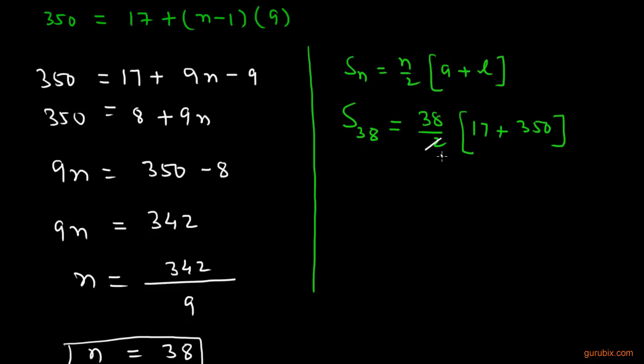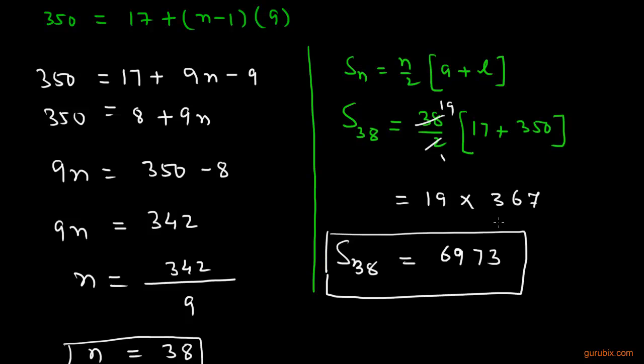Now we shall cancel out this 2 with this 38, we get 19. So 19 × 367. When we multiply 19 by 367, we get 6973.